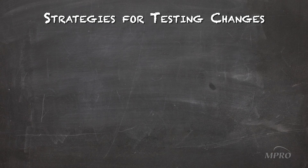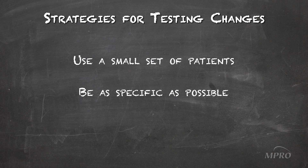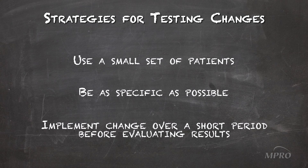It's important to implement changes on a small scale until one is certain that they will result in an improvement. It's also important to repeat the PDSA cycle until the desired change matches the AIM statement, meaning that what was set out to be achieved has been accomplished. Strategies to help ensure the change was actually for the better include using a small set of patients, doing it on a small scale, being as specific as possible, and doing it over a short period of time, like a few days to a week, before evaluating the results.